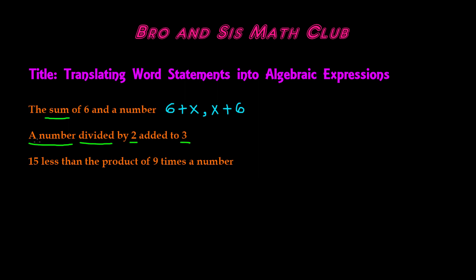Since we don't know the value of this number, we can use a variable such as n. We're dividing n by two, so n divided by two, added to three, plus three. Here we have our algebraic expression. You could also write this as 3 + n/2.